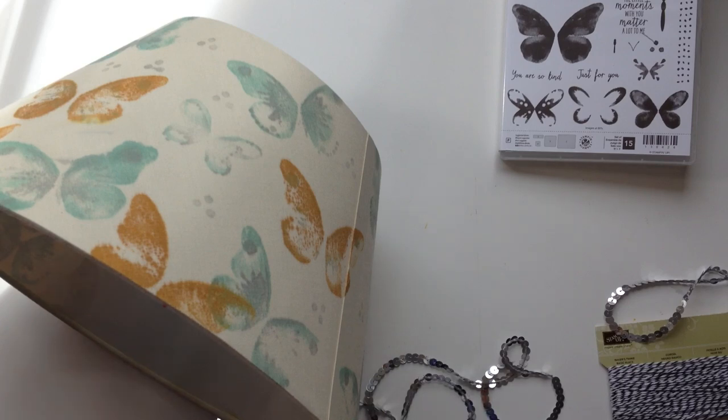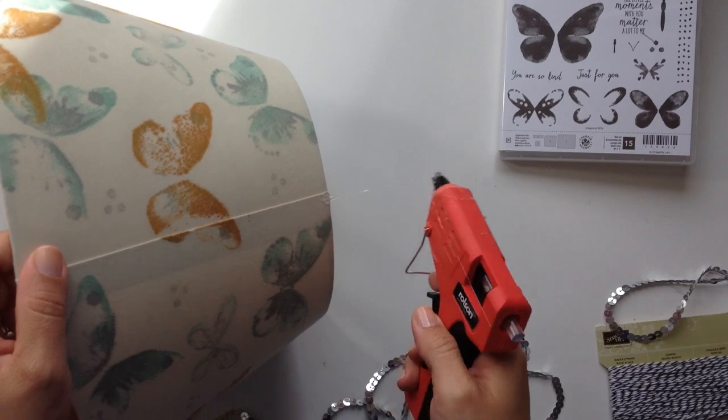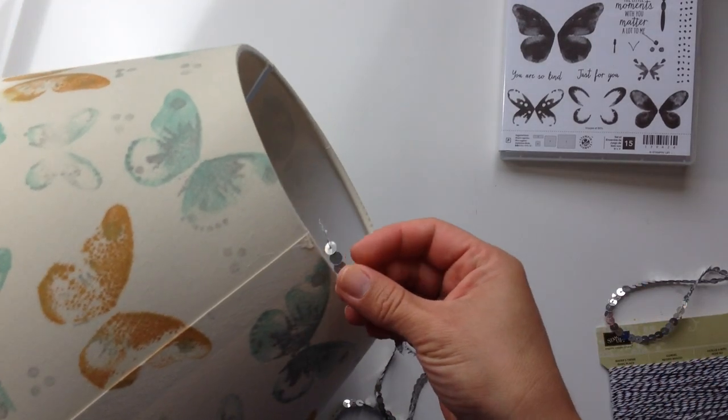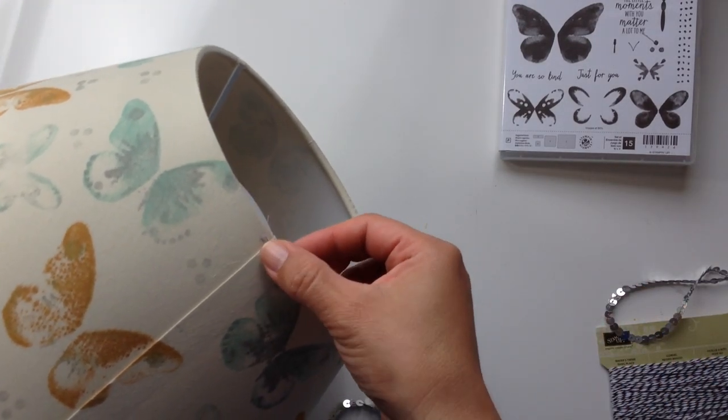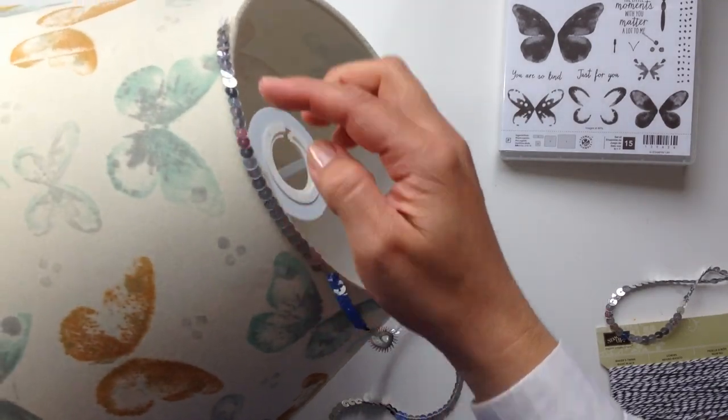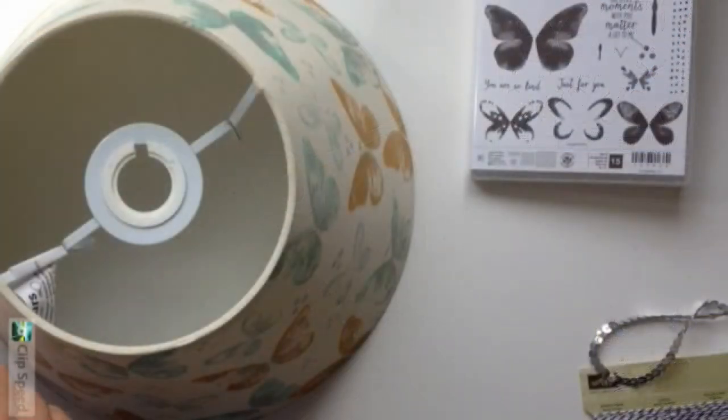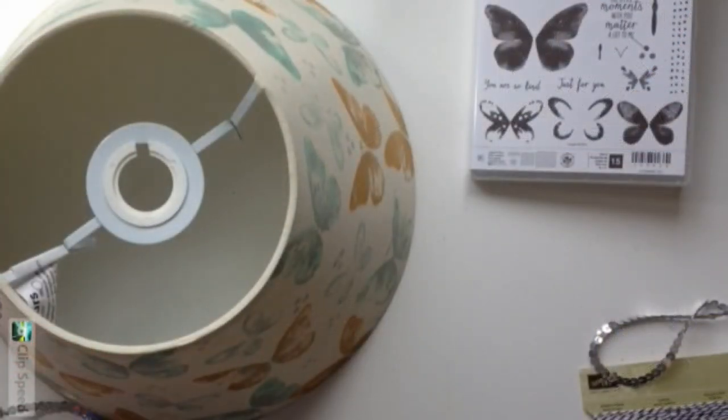To finish, I'm going to paste some Stampin' Up silver sequins on the edge of the lampshade. This is the way I do it: I just apply a little bit of hot glue and I'm pasting little by little that trimming until I get to the bottom, just like I'm doing here.